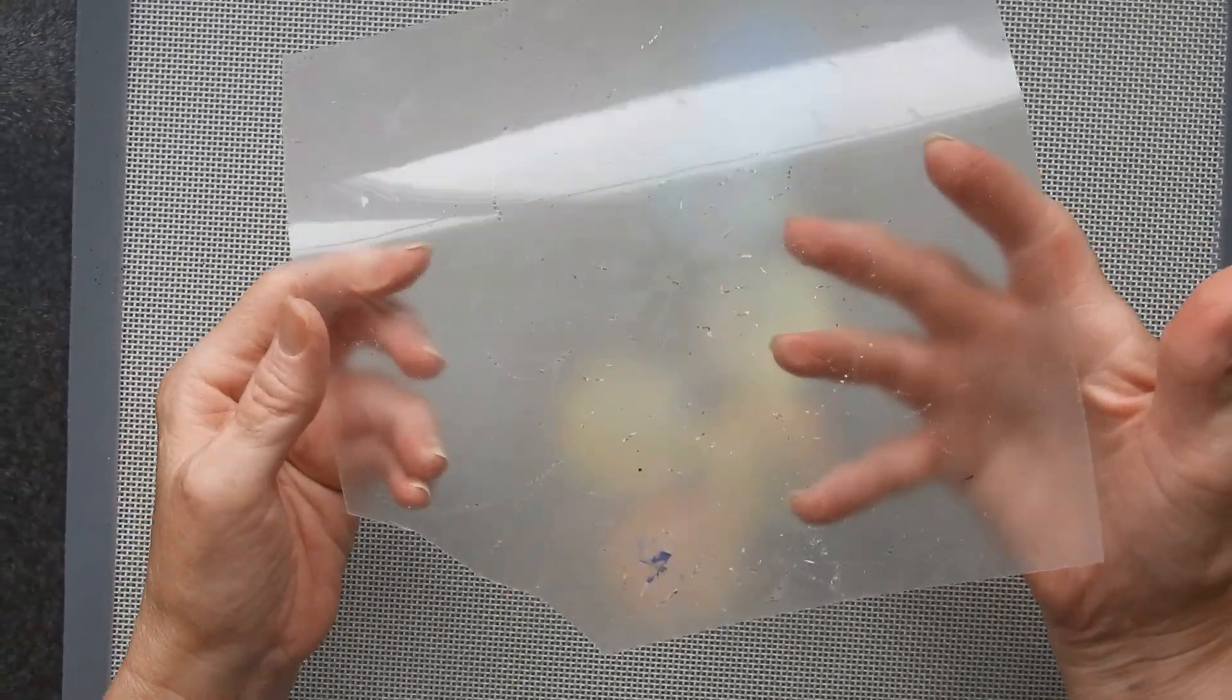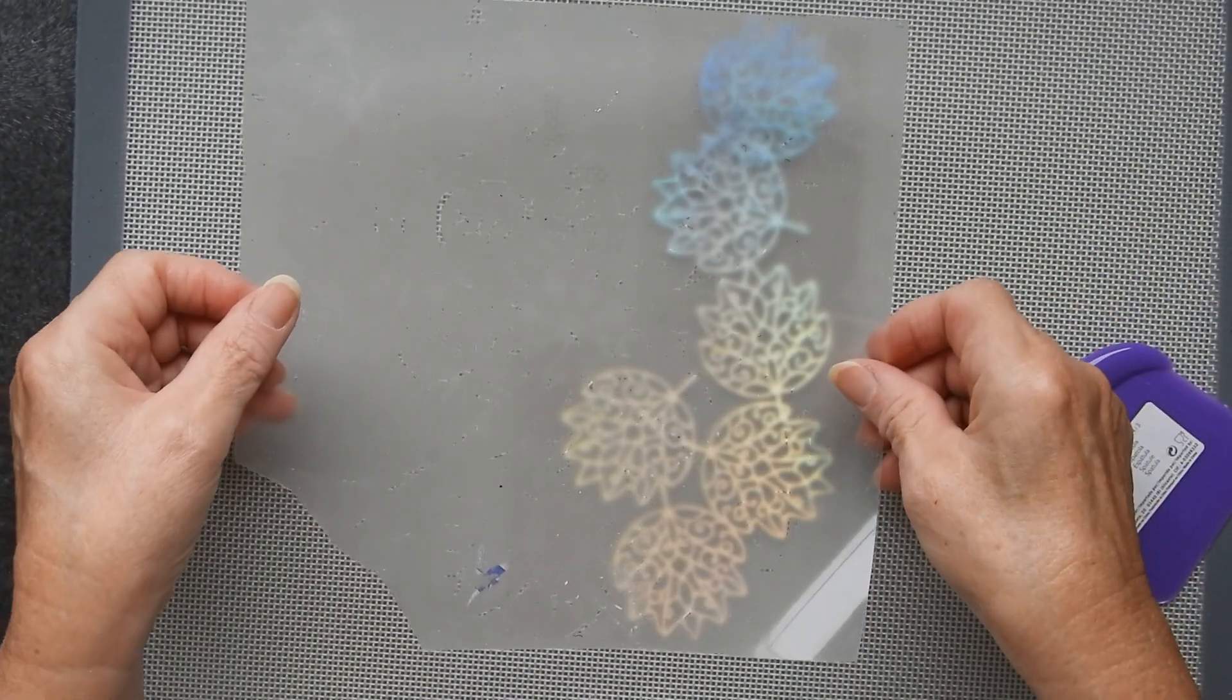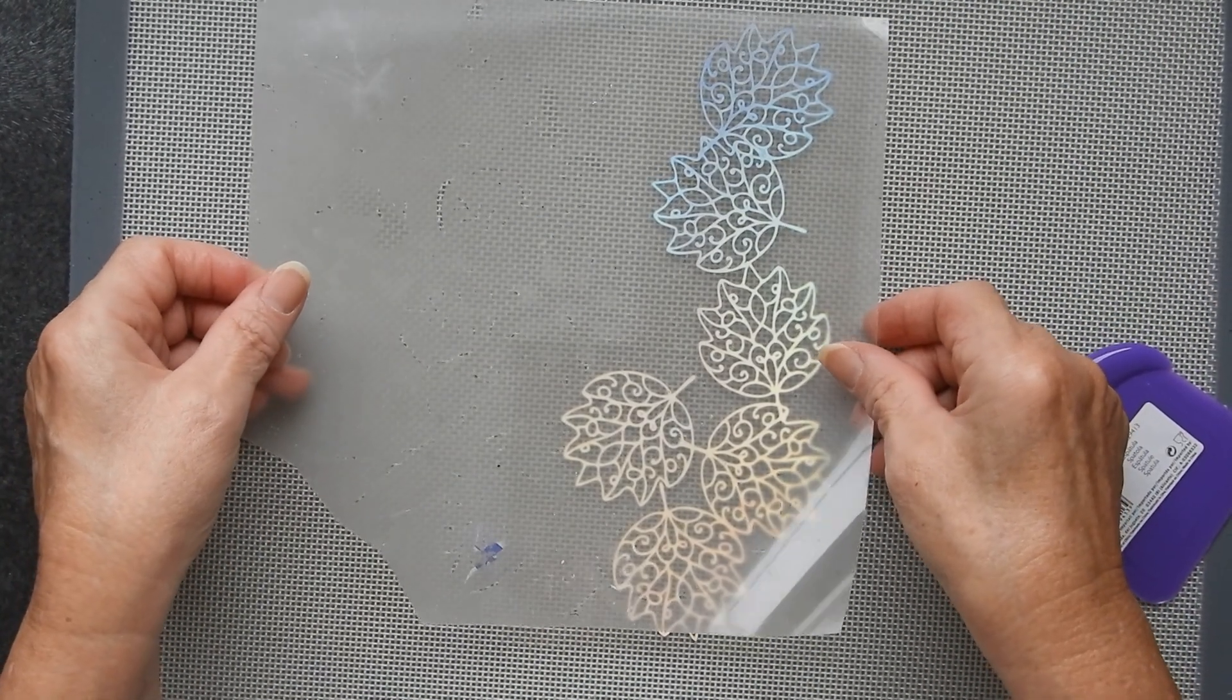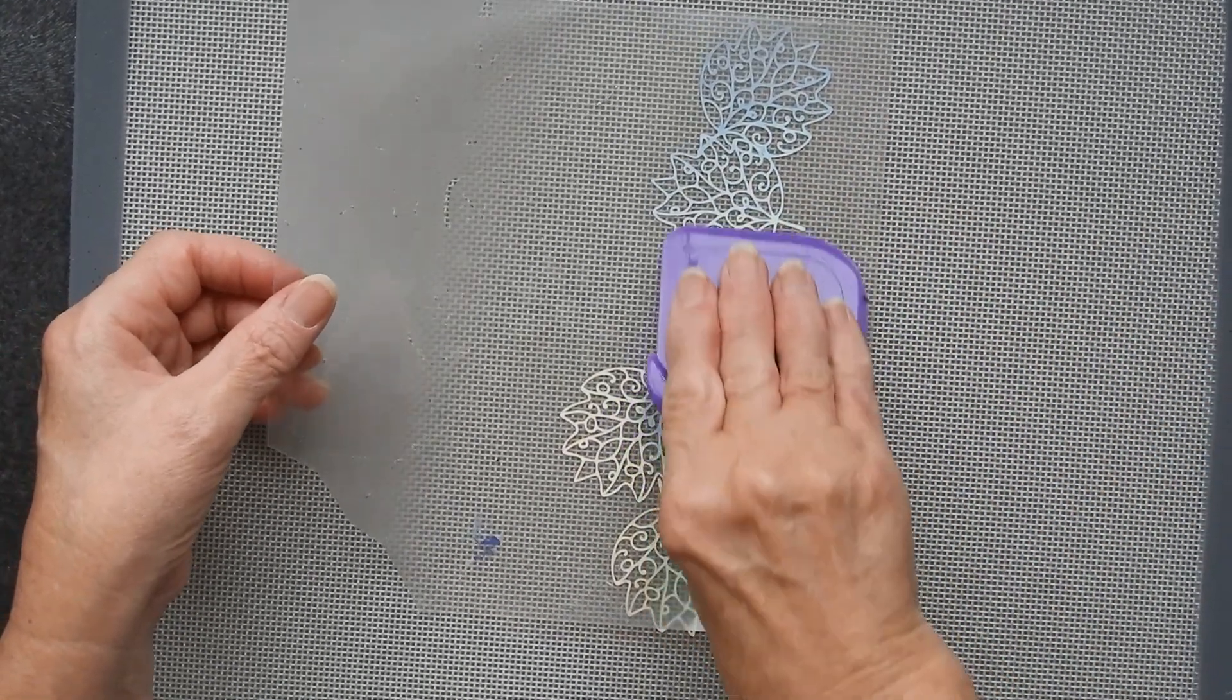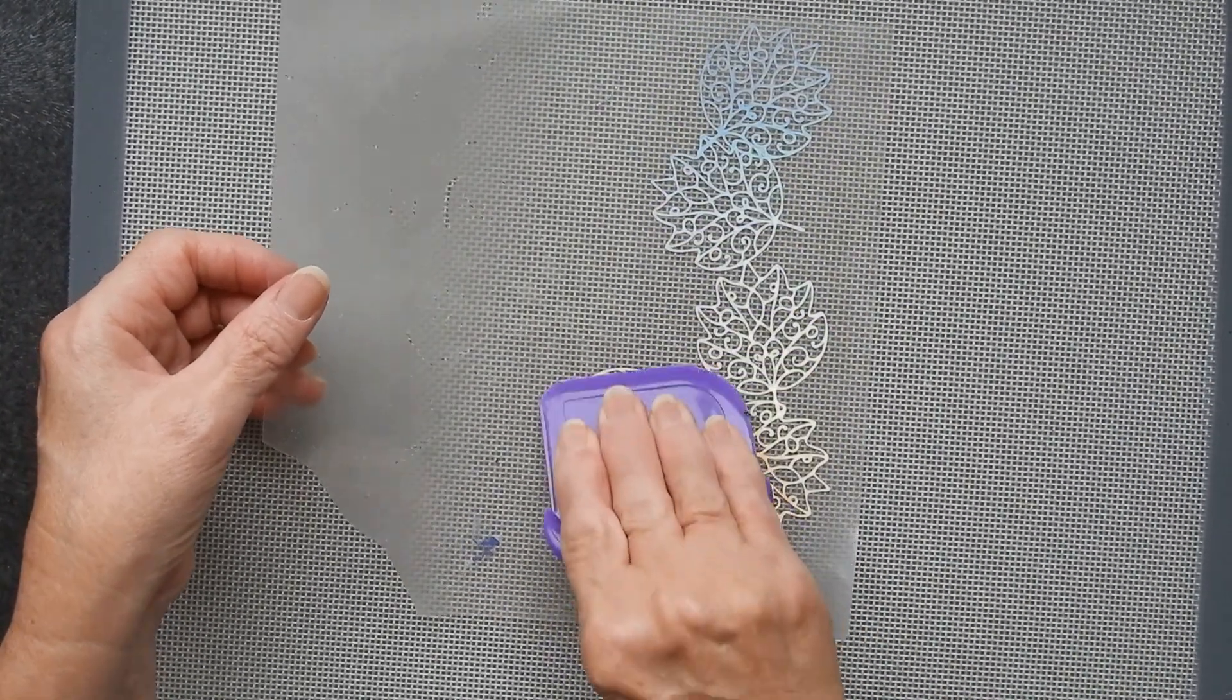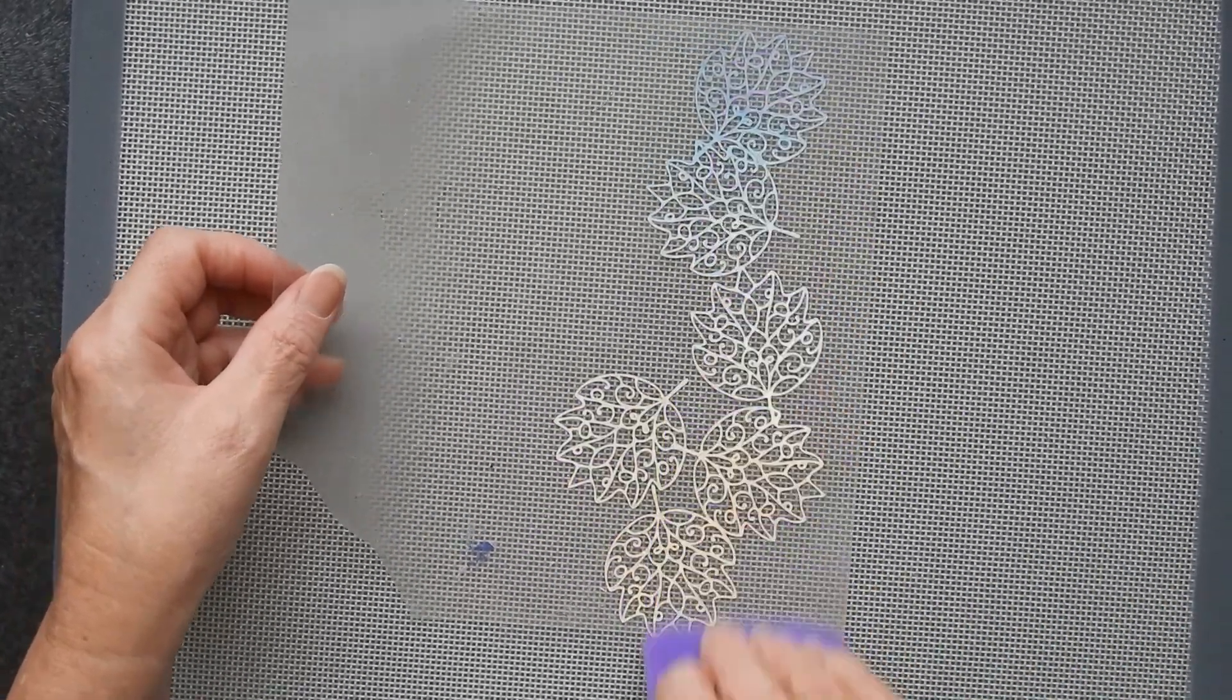which is a piece of backing from some HTV. So the reason I'm using this is because it's stiffer than my usual contact vinyl, and this being a very fine design, it could be a lot easier, I think, to transfer it like that.